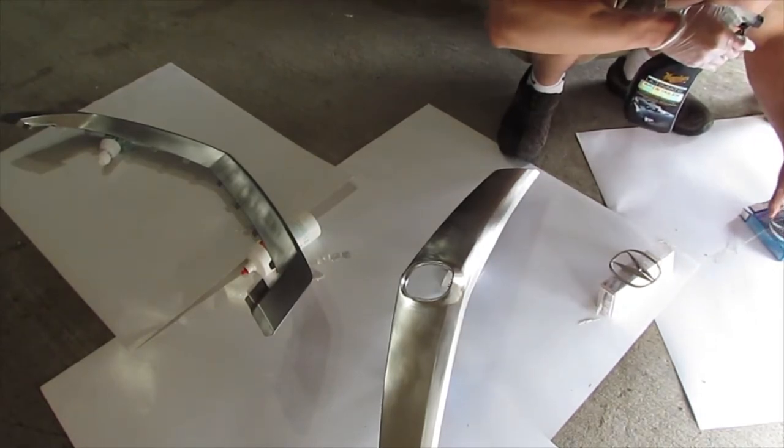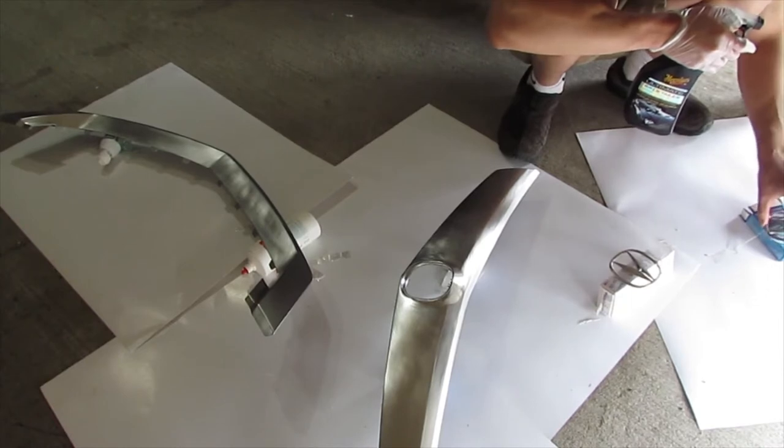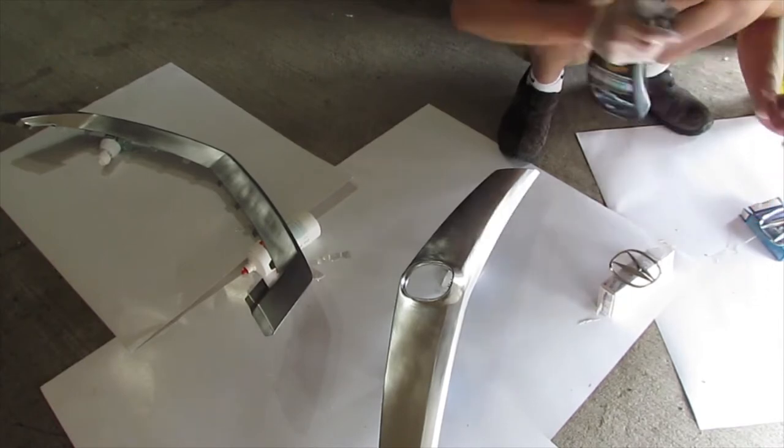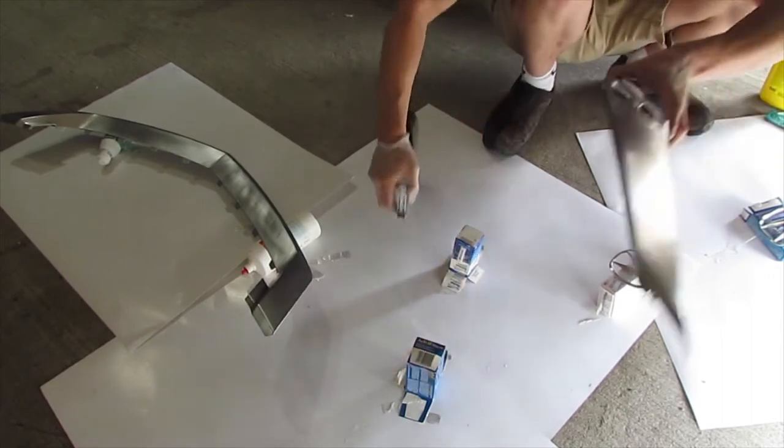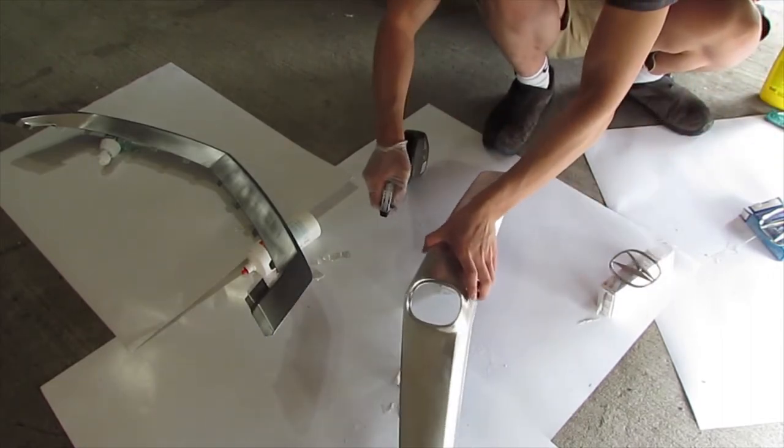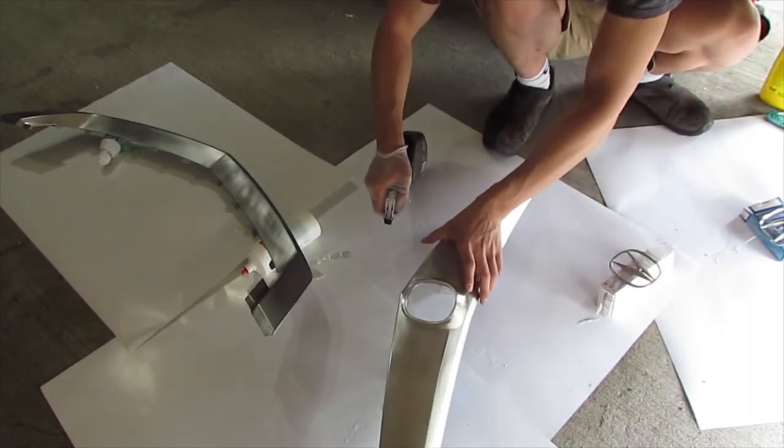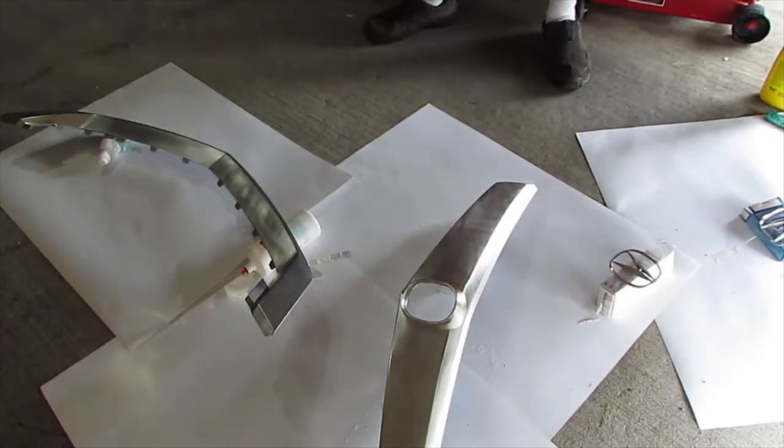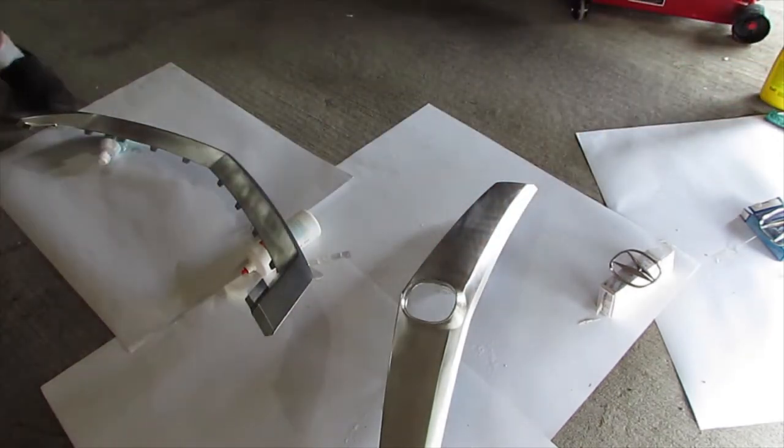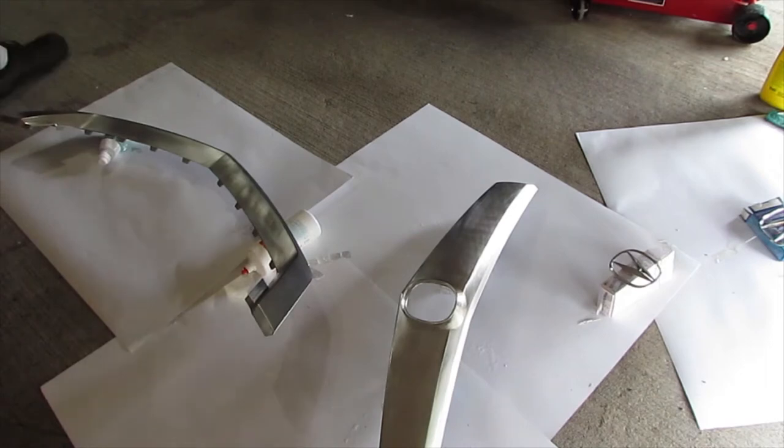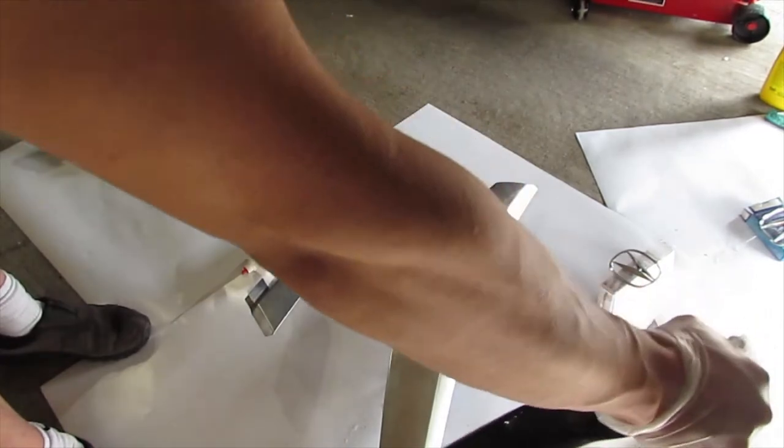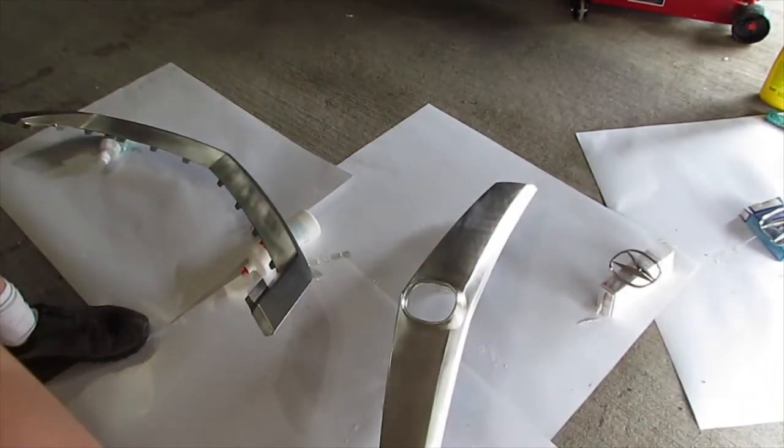In most paint booths at the bottom, there's a channel for water to flow through so the water holds down and weighs down all the dust particles in the area. When dust falls to the ground, it doesn't fly back up. That's why I'm doing this. Of course, make sure you don't get any water onto the surfaces you're painting.